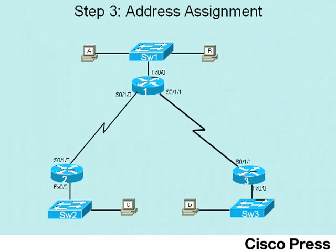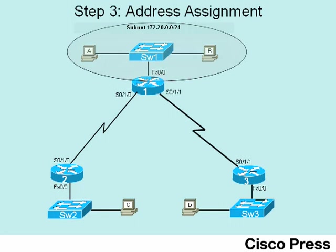We'll complete this video lab by assigning IP addresses per the network manager's recommendation. Routers get the largest IP addresses in each subnet, switches the next largest, and hosts the smallest. For the top LAN using the 0 subnet, we assign router R1's LAN interface the largest IP address of 172.20.0.254. Switch 1 gets the next largest address of 172.20.0.253. Hosts A and B get the smallest IP addresses in that subnet: 172.20.0.1 and 172.20.0.2.